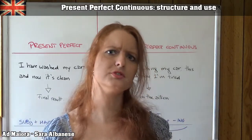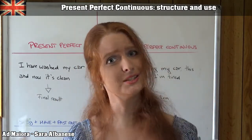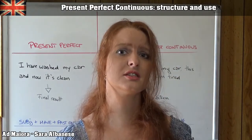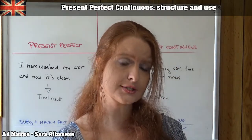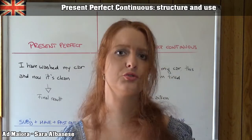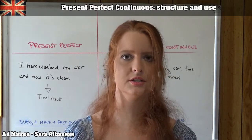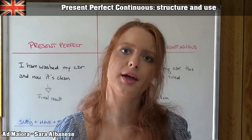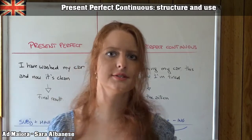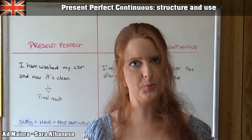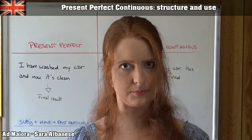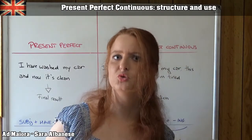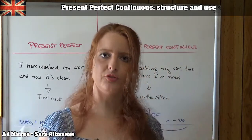Today we are talking about the difference between the present perfect and present perfect continuous. In my previous videos we talked about the difference between simple past and present perfect. We said that simple past is used for finished actions and the present perfect is used for actions that start in the past but continue in the present, or whose consequences and results are still present when I'm talking. Now, what is the difference between the present perfect and the present perfect continuous?